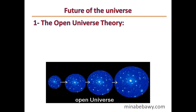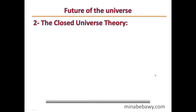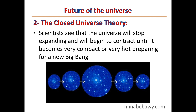What is the future of our universe? There are two theories. The first is the Open Universe Theory: scientists see that there is no definite end to the universe, meaning our universe will expand forever. The second is the Closed Universe Theory: scientists see that the universe will stop expanding and begin to contract until it becomes very compact or very hot, preparing for a new Big Bang — and so on. This is the end of Lesson 1.